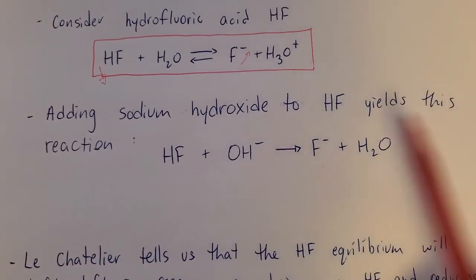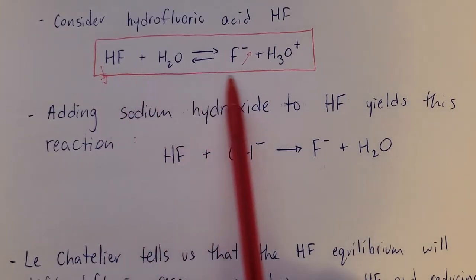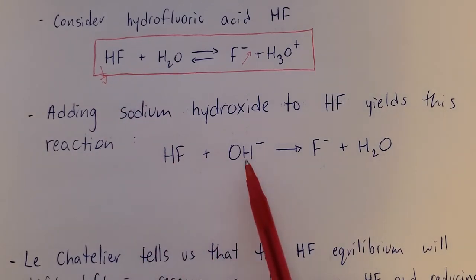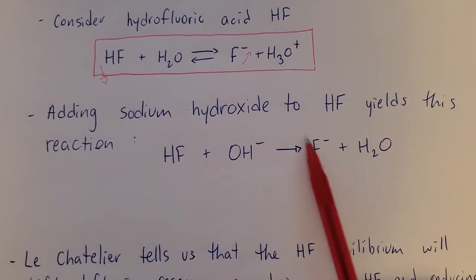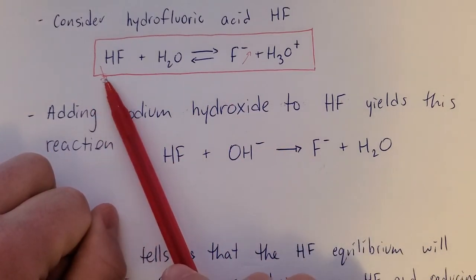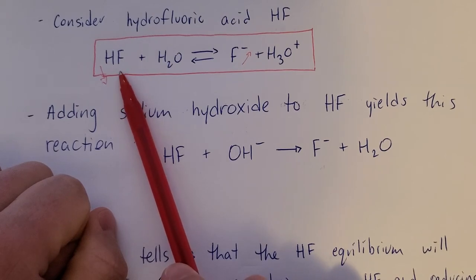That's what makes this a buffer solution. Even if you add a strong base to this, as long as you don't add enough to overwhelm the equilibrium system, the pH hardly changes, because adding the strong base produces the stress of the equilibrium. Increasing fluoride, decreasing HF, both of those stresses shift equilibrium left, producing more of this stuff.